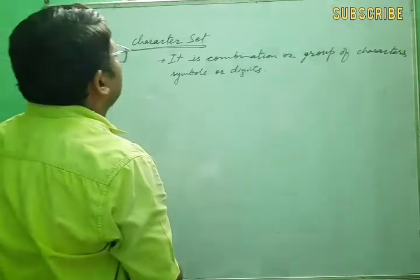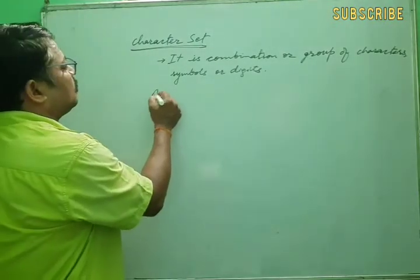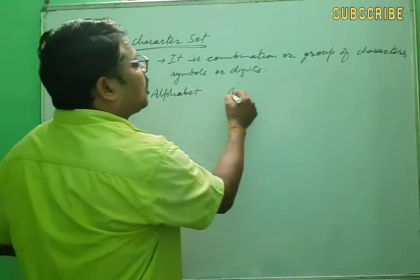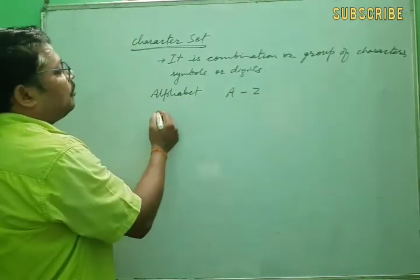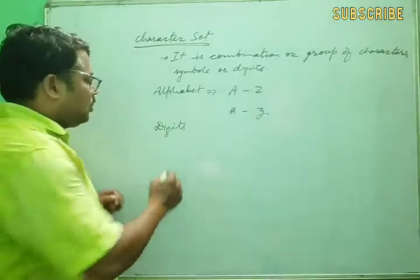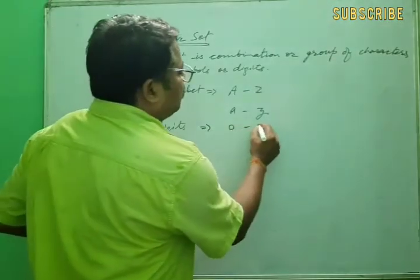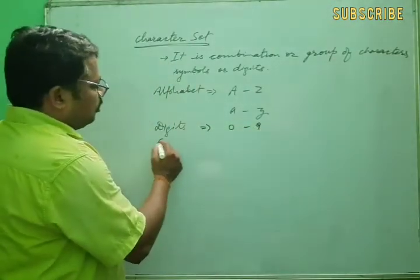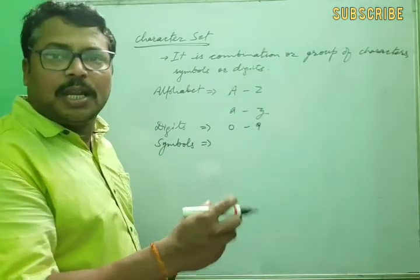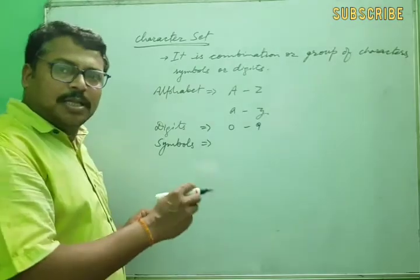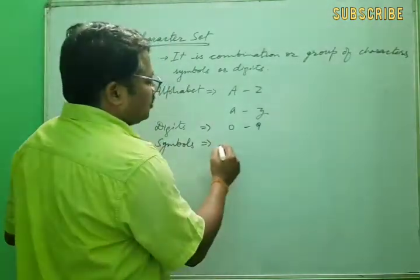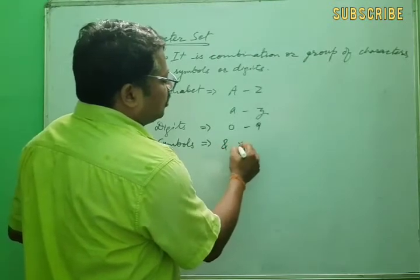In C++, we use alphabets from capital A to capital Z and small a to small z. Digits are 0 to 9. Symbols include all the symbols available on a keyboard — at the rate, star, divide, modulus, comma, semicolon, colon, small bracket, curly bracket, and block bracket.